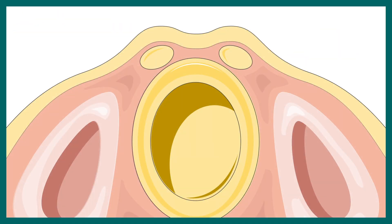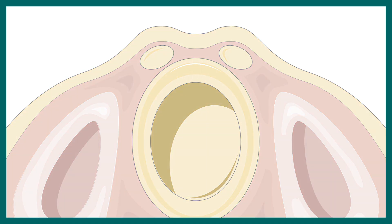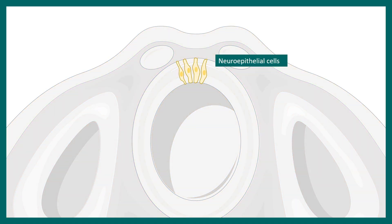Now let's get back to the cellular details. This is the neural tube — the folding and the closure have happened. If we zoom into the neural tube, we would see cell types known as neuroepithelial cells. These neuroepithelial cells are actually stem cells which have the capability of self-renewal — they divide and give rise to daughter cells which are exactly identical.